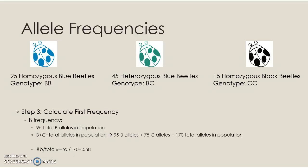Now we can calculate the frequency for B. We have 95 B alleles and 75 C alleles. First we add 95 and 75 to get our denominator: 170 total alleles in the population. We take the number of B alleles, which is 95, and divide by 170 — the total alleles for this gene in this population — and we get 0.558. So 0.558 is the allele frequency for the B allele.